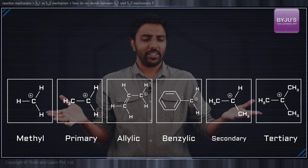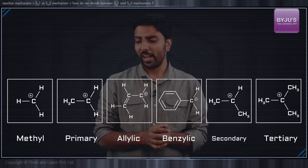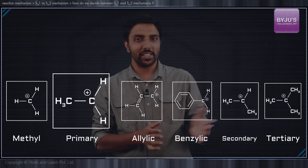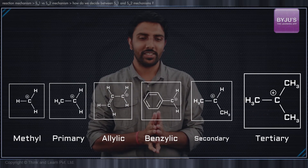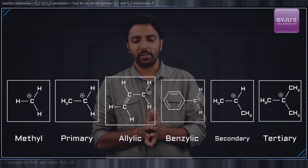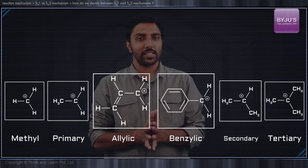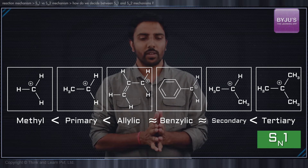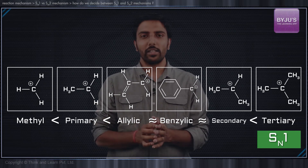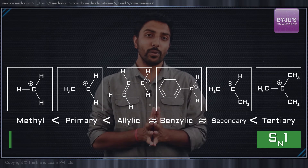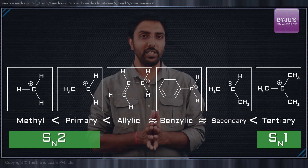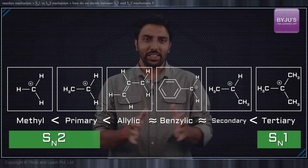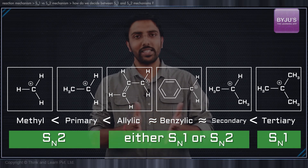Let us tabulate the entire set of species. We have the methyl substrate, followed by the primary substrate, and on the other extreme, the tertiary substrates. Between these two extremes, we have the allylic, benzylic, and secondary substrates. Tertiary substrates readily undergo the SN1 mechanism, whereas methyl and primary substrates undergo the SN2 mechanism much more readily. The allylic, benzylic, and secondary substrates in the middle can choose either the SN1 or SN2 pathway.